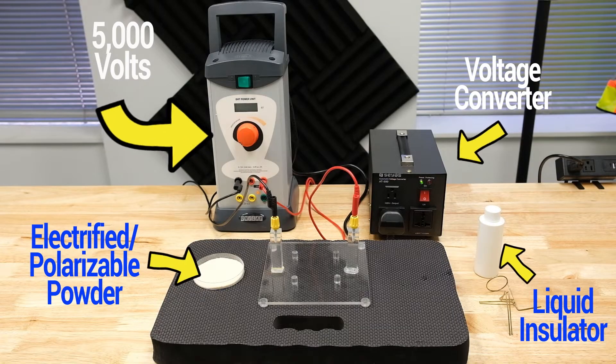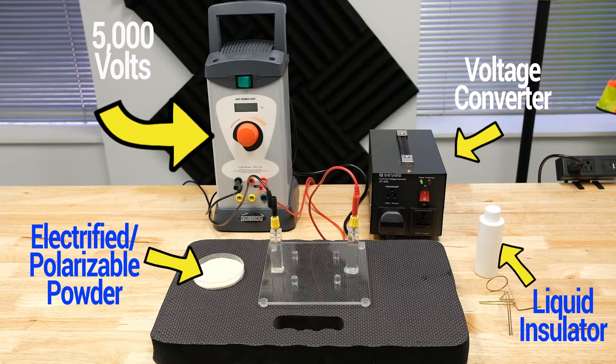Here we have a voltage converter. We also have an EHT power unit capable of generating up to 5,000 volts.